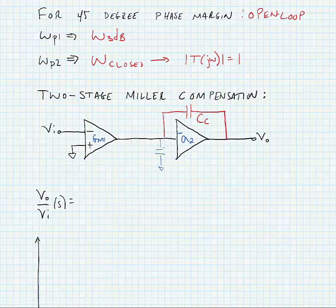What we have here then is we have some current flowing through this capacitor i_x, and that current i_x is equal to gm1 times the v_i.